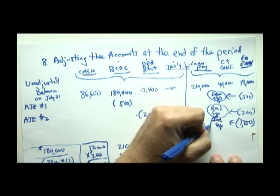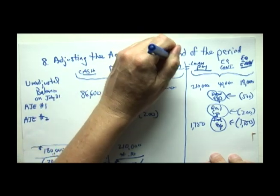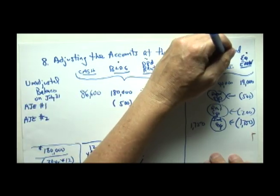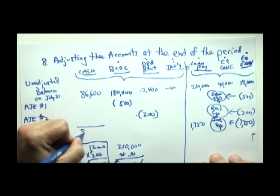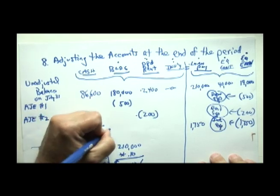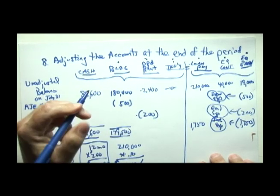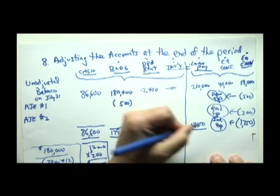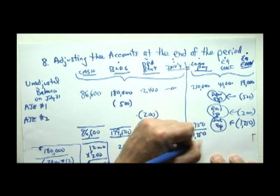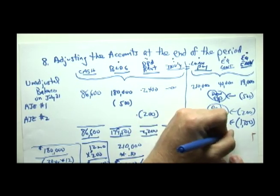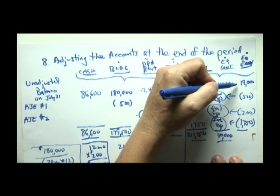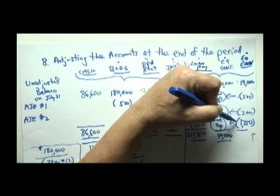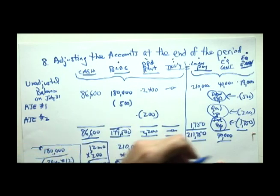So after we've adjusted all of our accounts, building, prepaid rent, inventory, loan payable, no adjustment to equity contributed, but we did make some adjustments to equity earned. We can now make sure we balance by adding up all of our assets. Cash hasn't changed. Building has dropped down to $179,500. Rent is now $2,200. We have no inventory. The amount we owe the bank is now $211,750. The amount of equity contributed is still $40,000. And equity earned now is $19,000 less $2,450. The sum of these three expenses gives us $16,550.